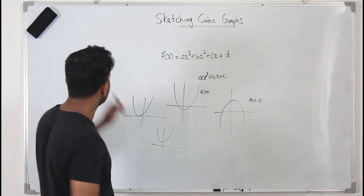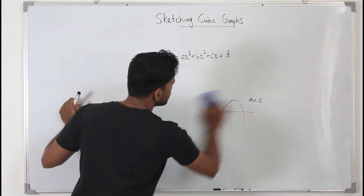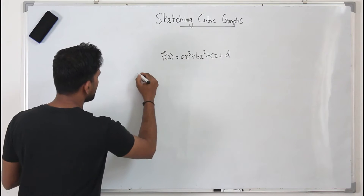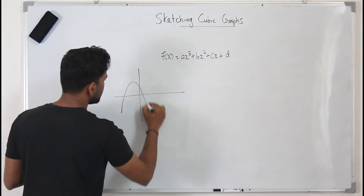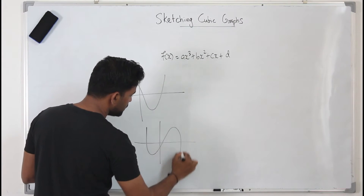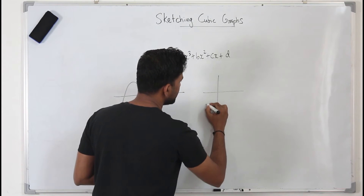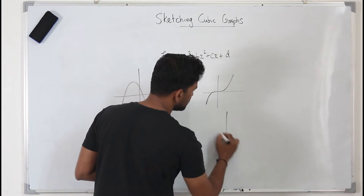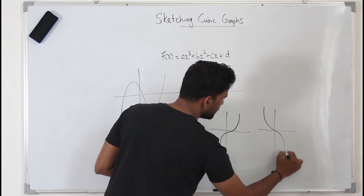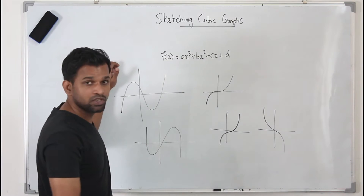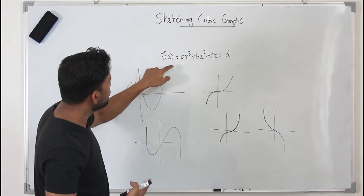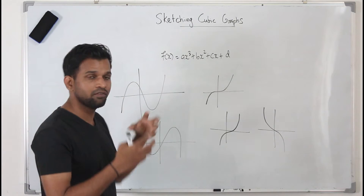Now, how about cubic functions? The graph of a cubic function may take several forms — it can look like a stretched S-curve, or the opposite of that, or sometimes it may even look different again. All of these are cubic graphs, and the curve may take any one of these forms depending on the function.